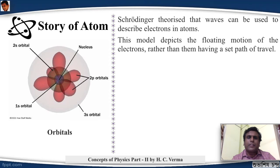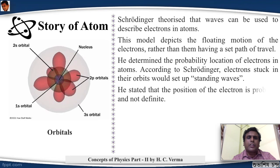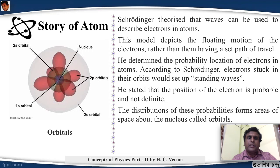He determined the probability location of electrons in atoms. According to Schrödinger, electrons stuck in their orbits would set up standing waves. He stated that the position of the electron is probable and not definite. So we were moving from the fixed stationary orbits to orbits which are probable but not definite - that is, the orbit cannot be defined in a rigid way. The distributions of these probabilities will form areas of space above the nucleus, and these spaces were called the orbitals. Some of the orbitals are shown in the figure. So an orbital is basically a wave function describing the state of a single electron in an atom.